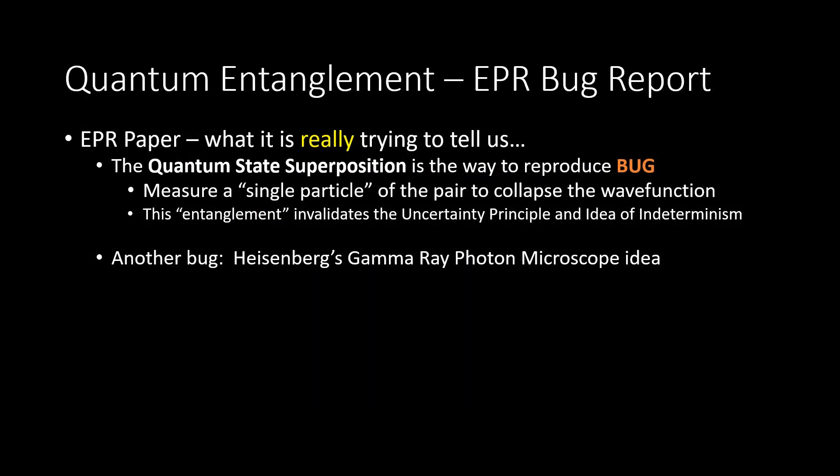So this is what the EPR paper is really trying to tell you. And as you can see, it is a really crushing bug report. And to quickly review, the quantum state superposition is what creates the ability to measure a single particle, and collapse a pair of particles in the same wave function. The entanglement math allows us to invalidate the Heisenberg uncertainty principle.